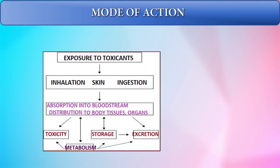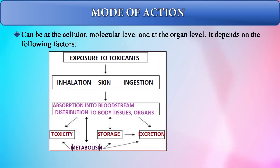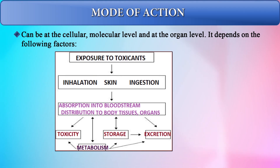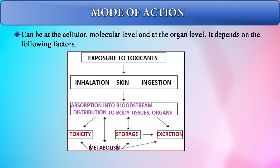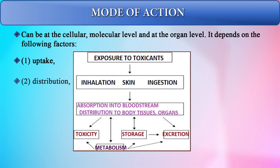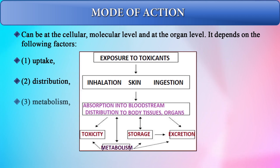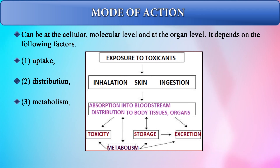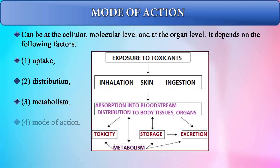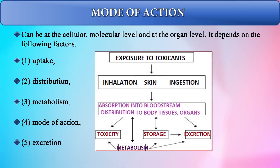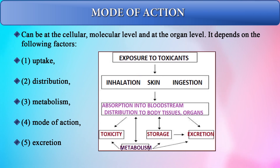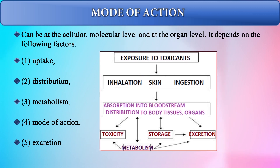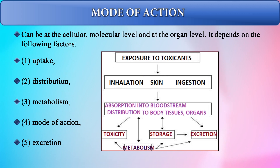This flow chart shows the mode of action of toxicants, which can occur at the cellular, molecular, and organ levels. Key factors include uptake of the toxic substance, its distribution in the human body, individual metabolic activity, mode of action, and excretion. Mode of action includes whether the toxicant is stored, biotransformed into another element, detoxified, or eliminated from the body through excretory routes.